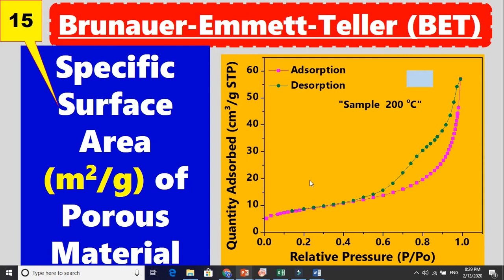This technique is called adsorption. They send nitrogen or argon gas and those gases adsorb onto the material. 'Absorbed' means when something goes inside, while 'adsorbed' means when it sticks to the surface — this is why it is used for finding surface area. The molecules adsorb into the pores and then desorb. The pink curve is for adsorption and the other is for desorption.